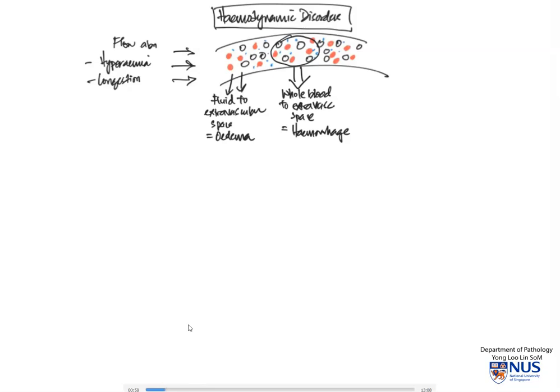Other things that can happen would include obstruction of blood flow. So there's actually very few reactions to injury in blood vessels. There can be leakage of fluid, there can be bleeding, there can be obstruction. And an example of this would be a thrombus. The thrombus is defined as an intravascular mass which is formed from the components of blood during life. So the danger of a thrombus is that it can occlude the blood vessel and therefore affect whichever organ or tissue is being supplied by this blood vessel.